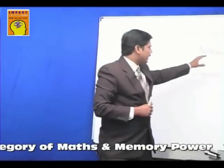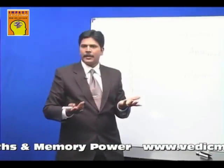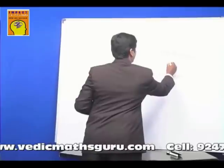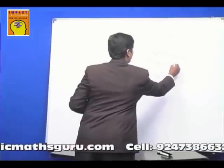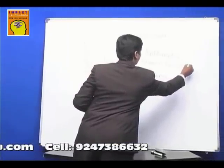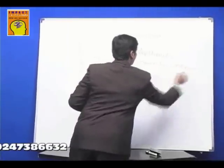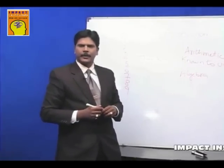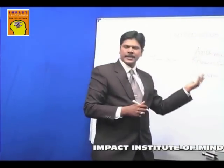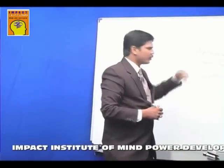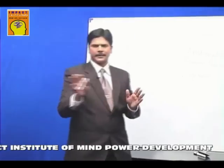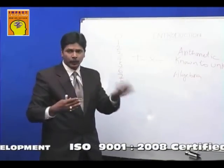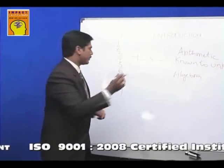We will first deal with arithmetic. What exactly is arithmetic? Arithmetic is known as 'known to unknown.' Known means some known value, unknown is some unknown value.